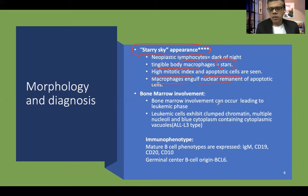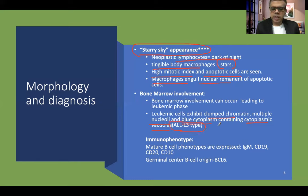If the bone marrow is involved, leukemic transformation can occur and neoplastic cells circulate in the peripheral blood. The leukemic cells exhibit clumped chromatin, multiple nucleoli, dark blue cytoplasm, and abundant cytoplasmic vacuoles. This is morphologically similar to ALL-L3 type — acute lymphoblastic leukemia L3 type — seen in children, which is believed to be equivalent to the leukemic form of Burkitt lymphoma.